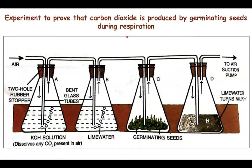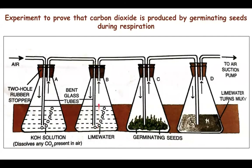We have another experiment to prove that carbon dioxide is produced by germinating seeds during respiration. Here we use four different conical flasks attached to each other using bent tubes, with a small suction pump at one end ensuring a unidirectional flow of air. The bent tube from the external atmosphere enters the liquid in flask A. A second bent tube begins from the space above the liquid in flask A and dips into the liquid in flask B. A third bent tube from above flask B's liquid passes close to the germinating seeds in flask C.